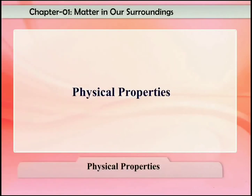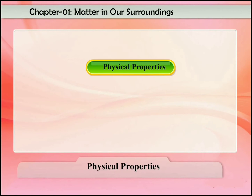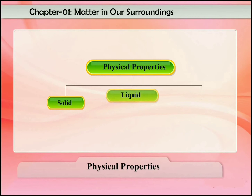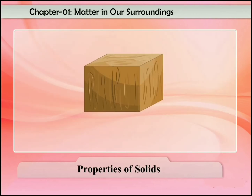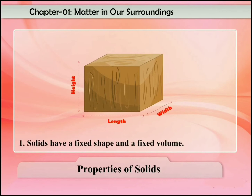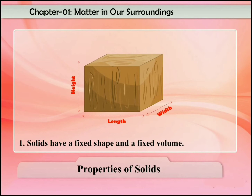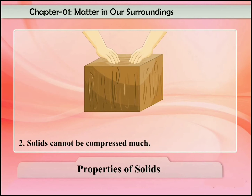Based on physical properties and physical states, all matter can be classified into solid, liquid, and gas. Solids have the following characteristic properties: one, solids have a fixed shape and a fixed volume; two, solids cannot be compressed much.